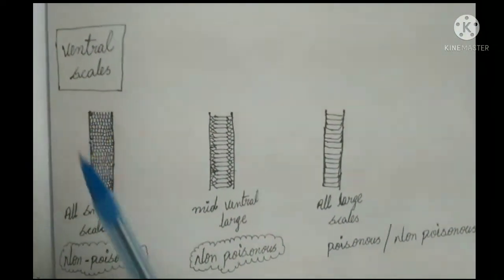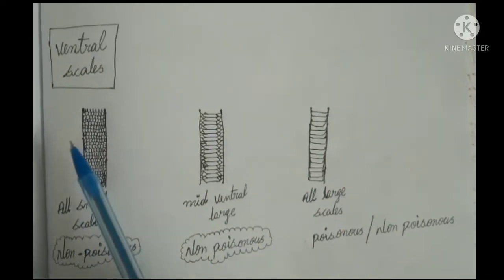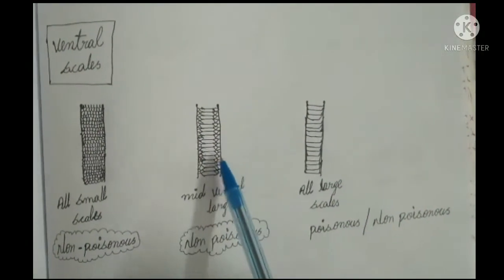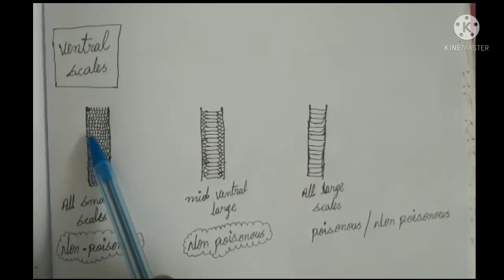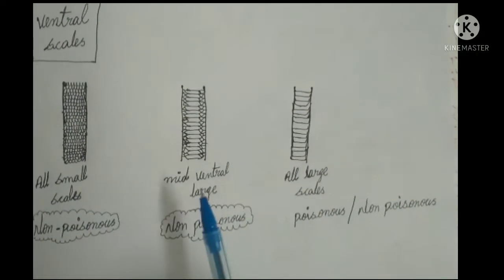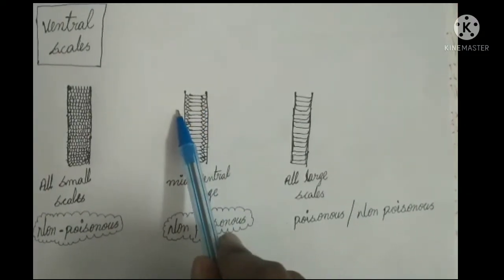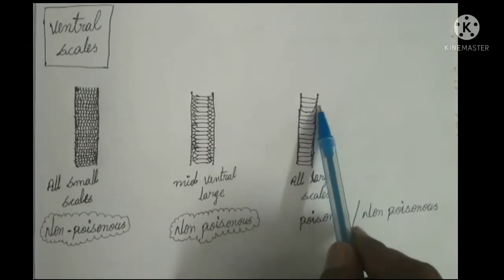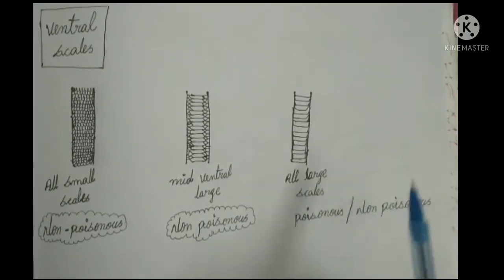Here we have ventral scales. Ventral scales are on the edge of the stem, on the top and front of the upper. Ventral scales seem to be very soft. The bottom is the panna richter. The other ventral scales — here we have many small ventral scales that are non-poisonous snakes. Mid-ventral large scales are mid-ventral scales. Small scales are small, that are non-poisonous snakes. Large scales — this is the poisonous.